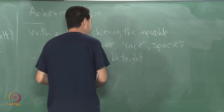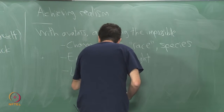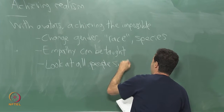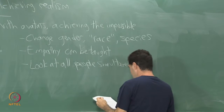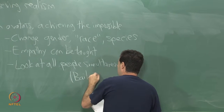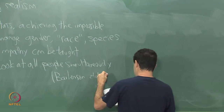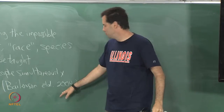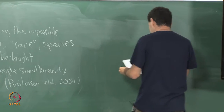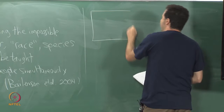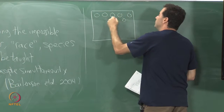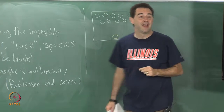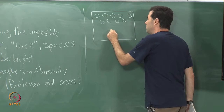Along the same line of achieving the impossible: you may be able to look at all people simultaneously. This comes from a paper by Jeremy Bailenson et al. from Stanford in 2004. Jeremy Bailenson has done a lot of research on social interaction in virtual reality. In today's classroom there are many students and one lecturer — me — and I can only look in one direction at a given time. That is the real world constraint.